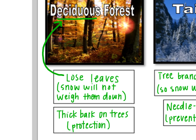The other thing deciduous trees have is thick bark. This allows them to protect themselves from cold weather — it conserves heat, conserves water, and can also protect them from predators. So the bark of the tree is its own protection.